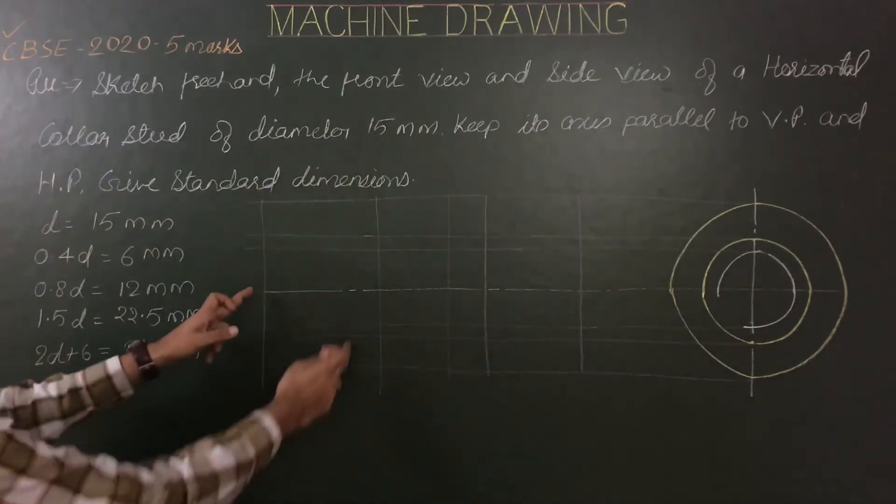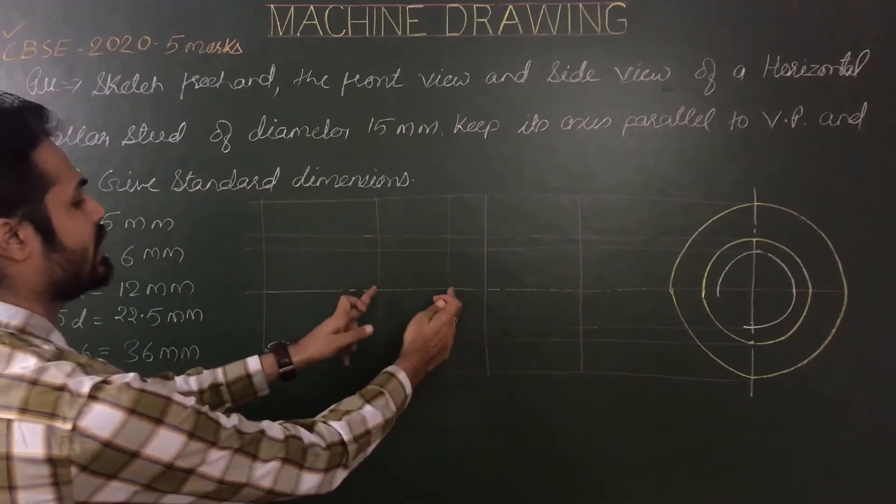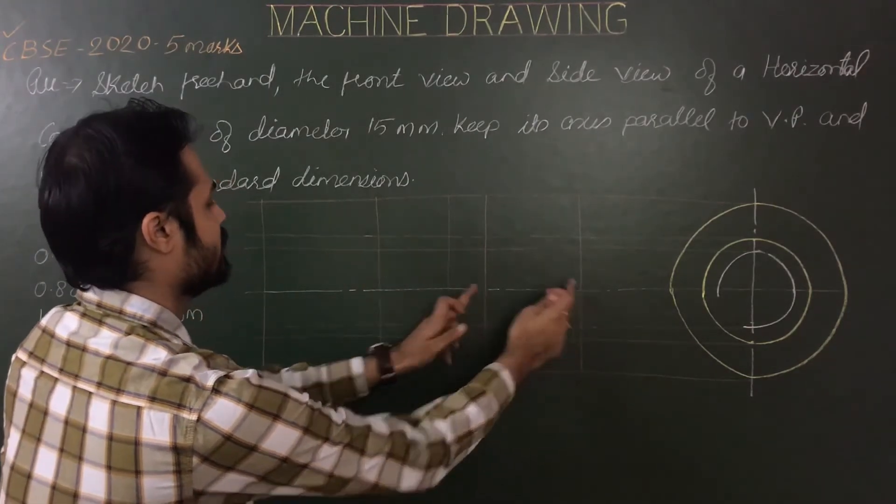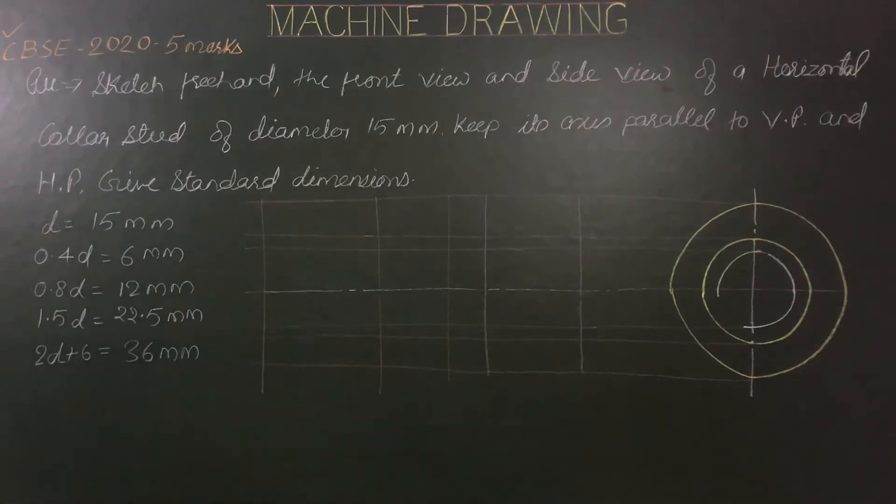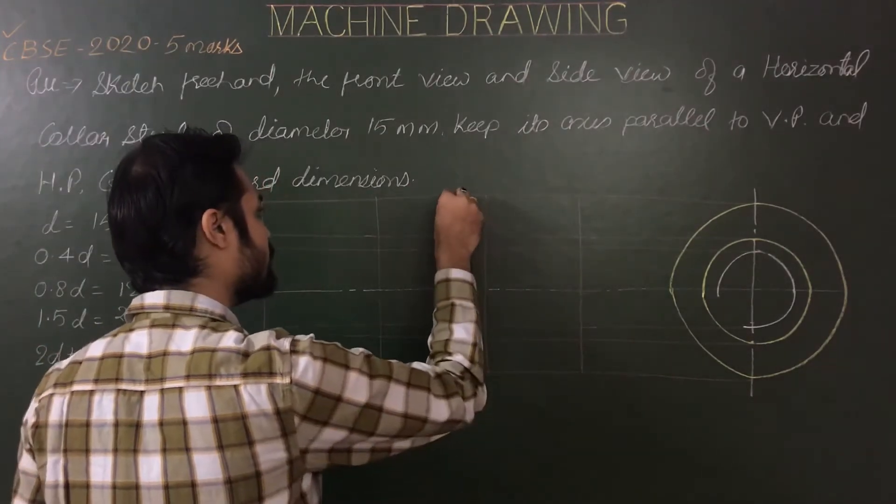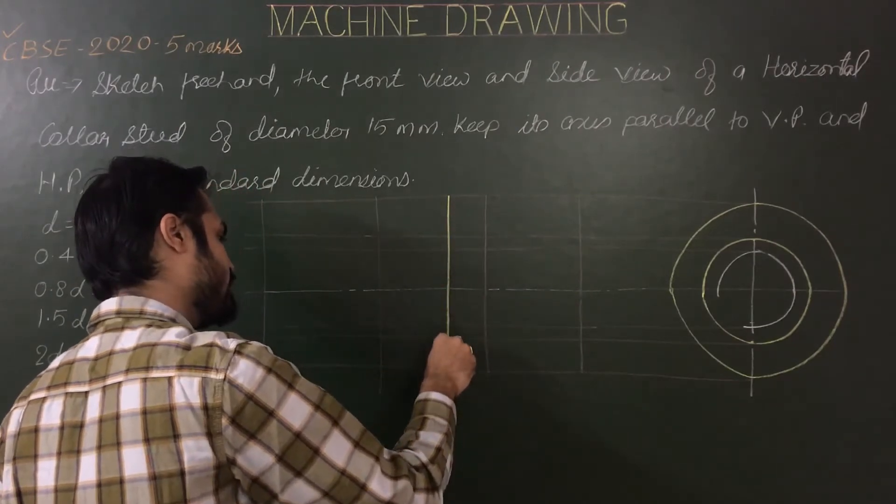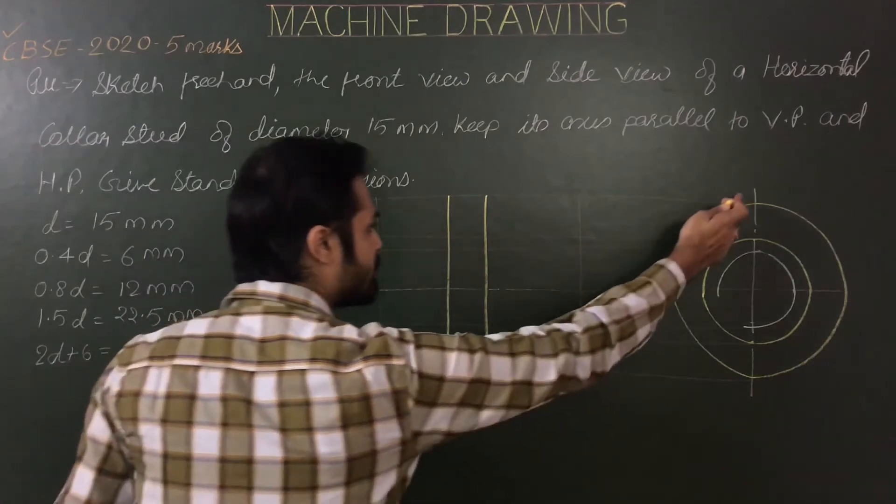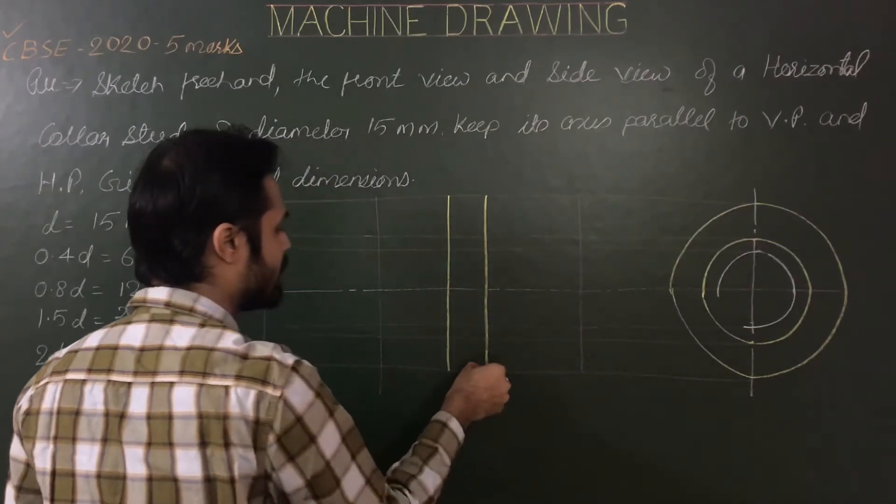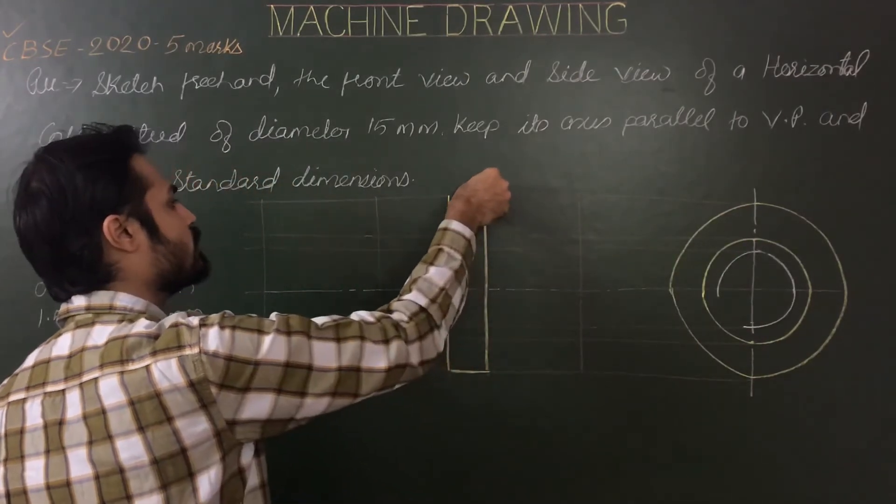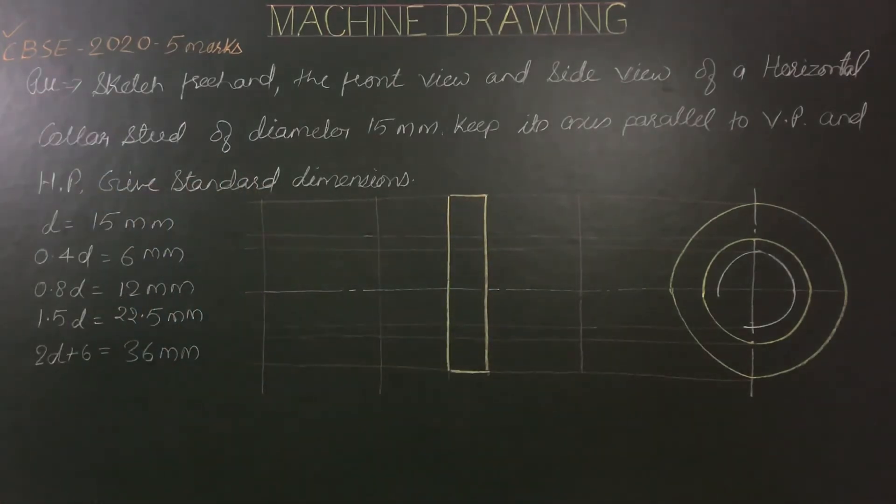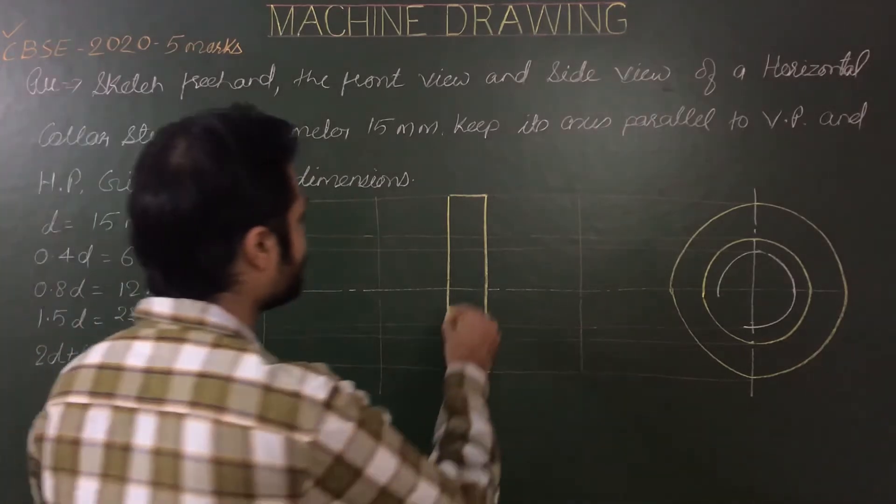Again I'm repeating: 2d plus 6, any length, 0.4 of d, d. Now first of all show outlines of collar because this part is fully visible. Using extreme limits of this circle and width equal to 0.4 of d, this is the collar. Then outlines of metal end.